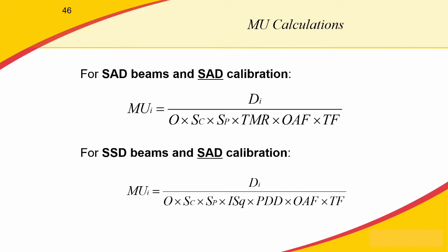Now let's say we wanted to calculate the number of monitor units that need to be delivered so we can deliver the prescription dose to the patient at the prescribed point. We use our dose calculation formalism and solve for monitor units: monitor units equal the prescription dose divided by our output calibration factor times all of the dose ratios needed to convert from the calibration condition to our specific treatment condition.